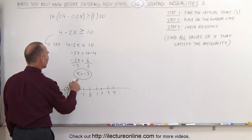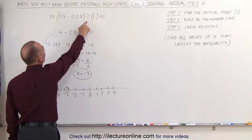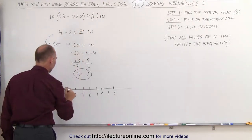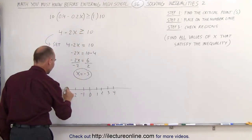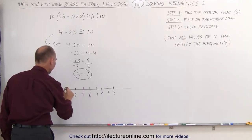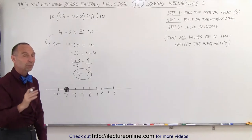Notice, since it says greater than or equal to, the critical point is included in the answer. So we're going to fill in that little circle, which indicates that the number -3 is part of the solution.